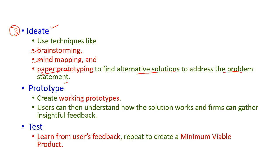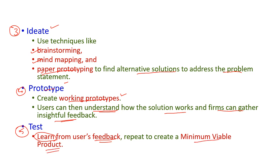The fourth stage is prototype: create working prototypes so users can understand how the solution works and firms can gather insightful feedback. The fifth stage is test: from user feedback, we test the project to determine whether the minimum viable product is obtained. If not, we repeat the process until we achieve the minimum viable product.